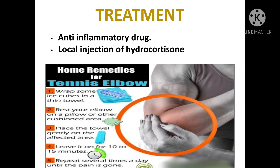To treat tennis elbow, anti-inflammatory drugs and local injection of hydrocortisone can be used. For home remedies, first wrap some ice cubes in a thin towel, then rest your elbow on a pillow or other cushioned area. Place the towel gently on the affected area and leave it on for 10 to 15 minutes. Repeat several times a day until the pain is gone.